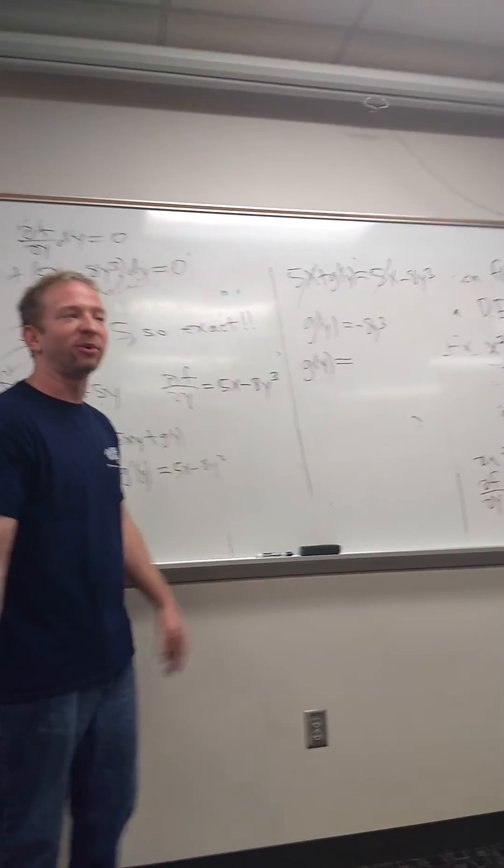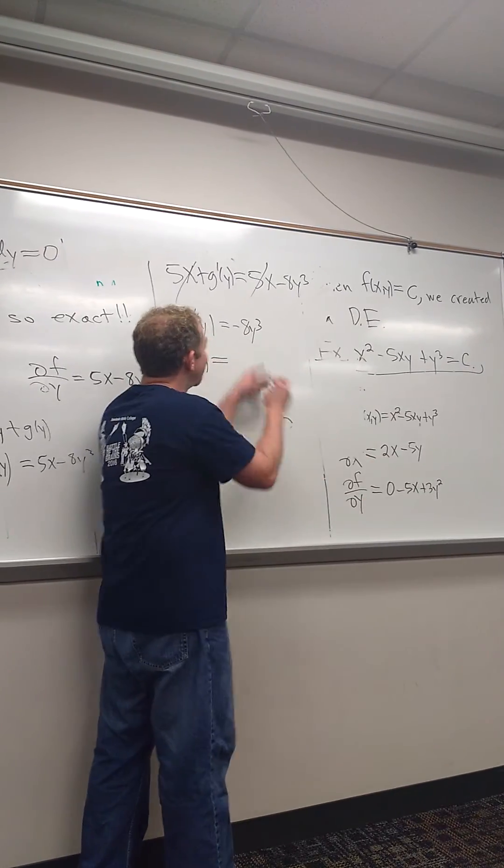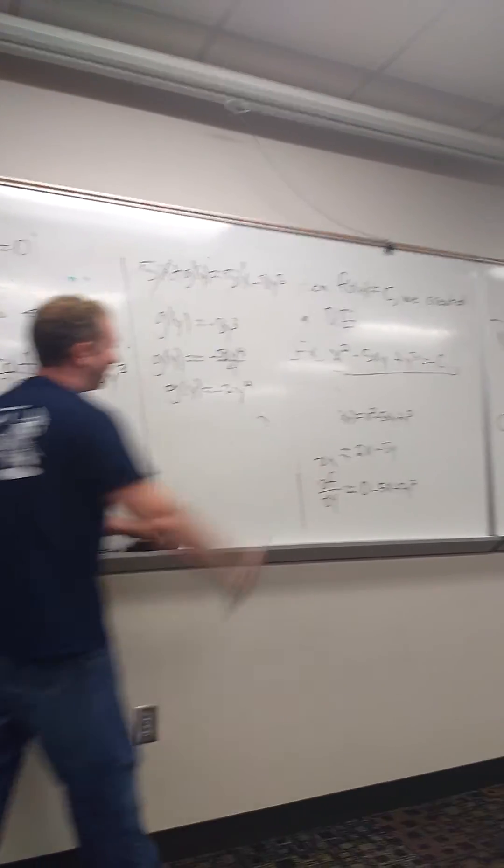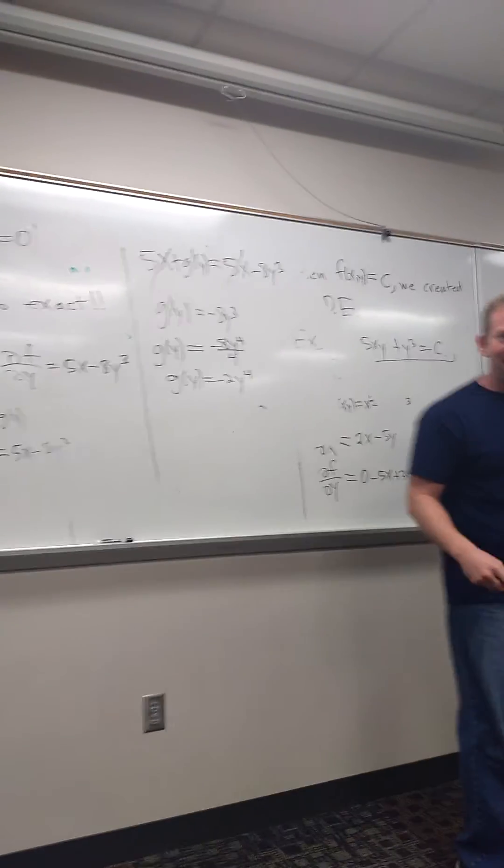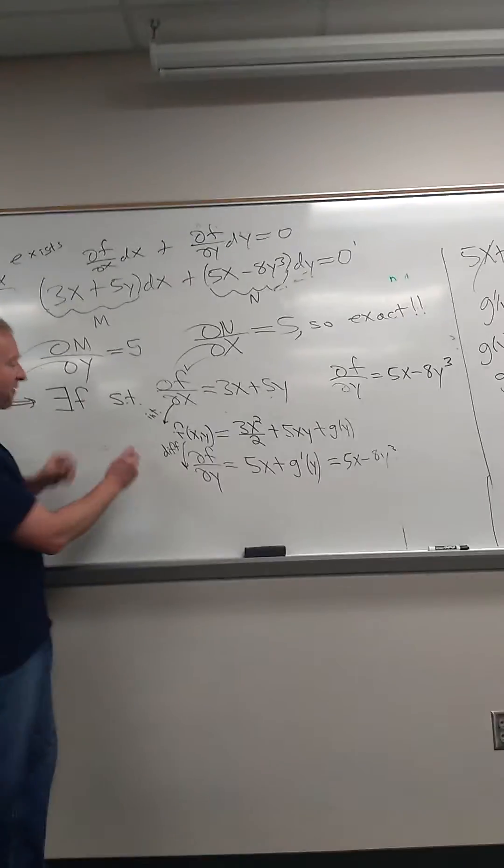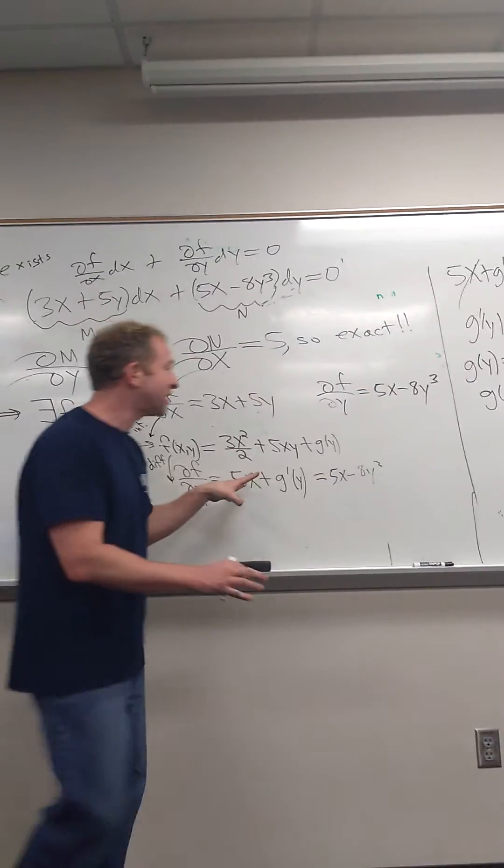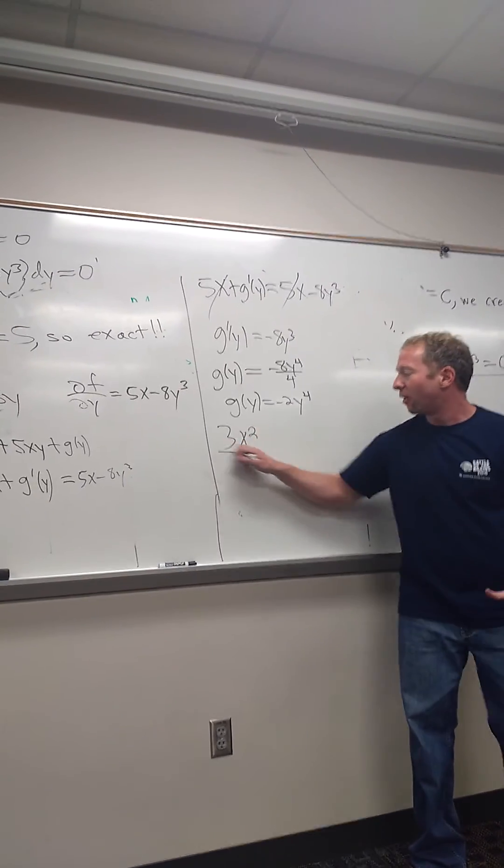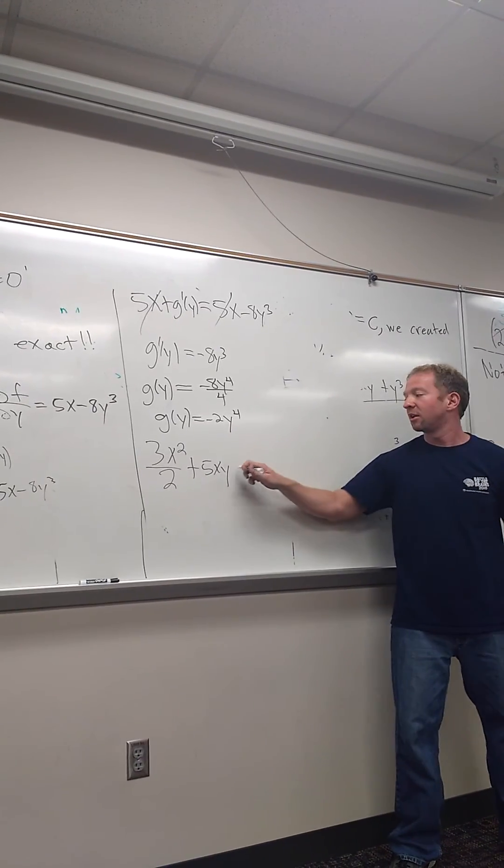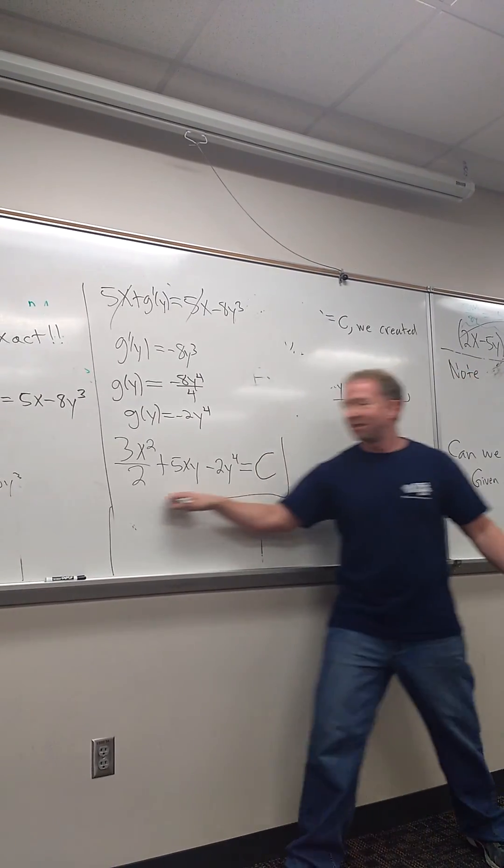All right. So this is g of y. We're definitely going to have time to start 2.5 today. And so then we're almost done. So now here's our f. So the final answer is always what? f of xy equal to what? C. C. Good. Always. Every time. So you just take this. So it's 3x squared over 2 plus 5xy plus little g. But little g was this guy. Little g of y. And it's all equal to what? C. That's it. You've solved an exact equation. So they're not that bad.